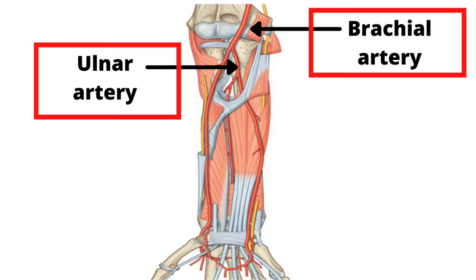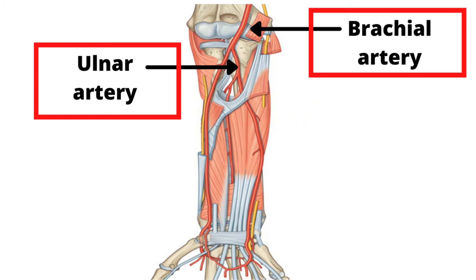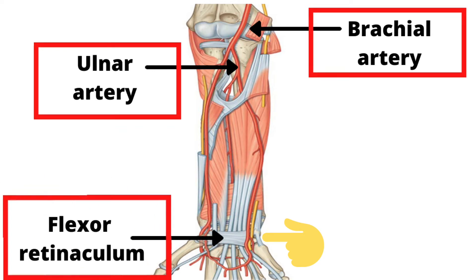The ulnar artery begins in the cubital fossa and runs obliquely downwards and medially in the upper one third of the forearm. In the lower two thirds, the course is vertical. It then enters the palm by passing superficial to the flexor retinaculum.